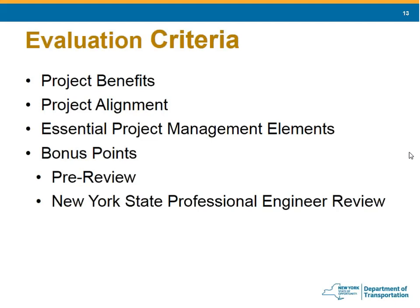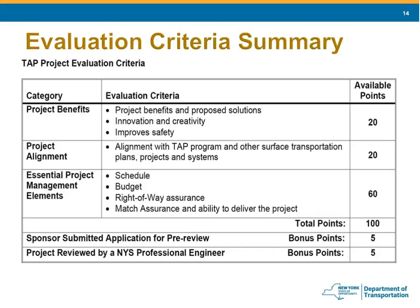The three categories for each program are the same: project benefits, project alignment, and essential project management elements, but some details vary by program. The most important component is the project management elements, which are worth 60 points — schedule, budget, and the ability to deliver the project. All components of a successful application are included in the guidebook and appendices, so please include all necessary information so your application scores well. Details for TAP evaluation criteria can be found in Appendix B.